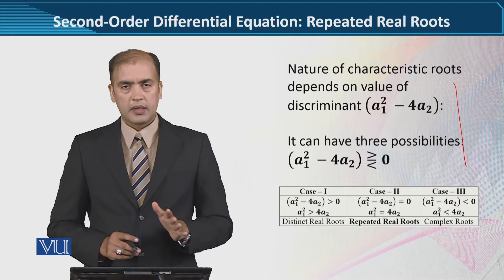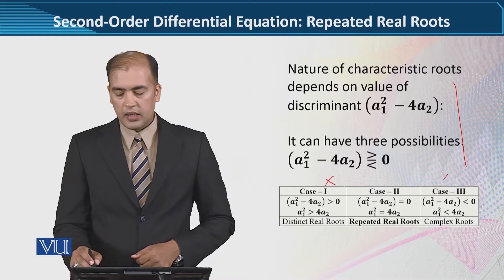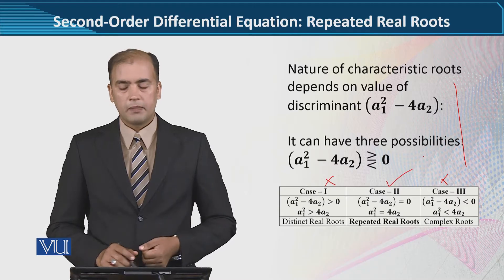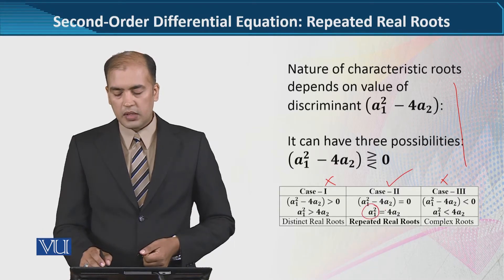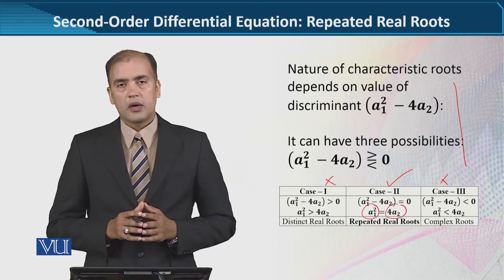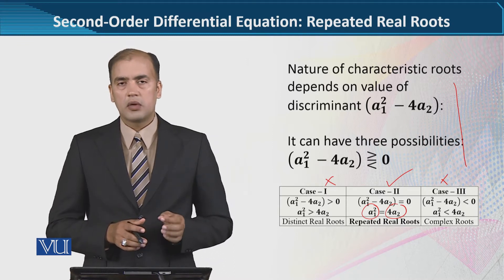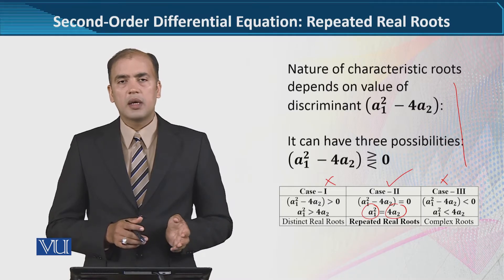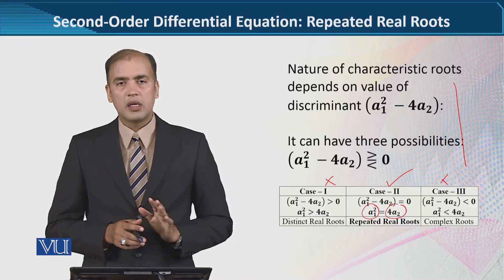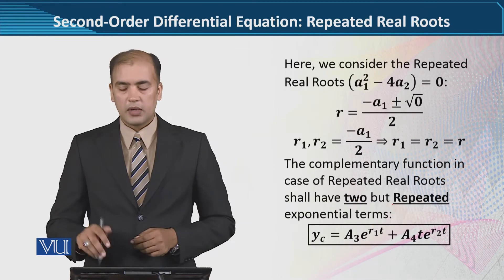ہم نے discriminant کو لکھا تھا اور اس کی اہمیت کا اندازہ لگایا تھا۔ اس کی value کو zero سے compare کیا تھا۔ یہاں پر case 2 کی possibility ہے because discriminant اس case میں ہم zero assume کر رہے ہیں۔ اور اگر zero assume کر رہے ہیں تو دونوں terms جو discriminant میں ہیں they are equal and that is why the answer is zero۔ اور اس کا consequence یہ ہوگا that we will be dealing with repeated real roots۔